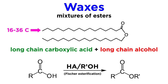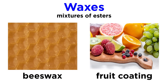The carboxylic acid usually has an even number of carbons between 16 and 36, while the alcohol has an even number of carbons from 24 to 36. We can see compounds like this in beeswax and acting as a protective coating on fruits, berries, and leaves.